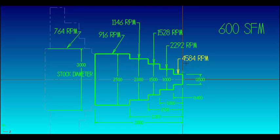At each diameter, maintaining 600 surface feet per minute constant surface speed, we start out with 4584 RPM at half inch, then at 1 inch diameter we're at 2292 RPM, then at 1.5 inches we're at 1528 RPM, at 2 inches we're at 1146 RPM, and at 2.5 inches we're at 916 RPM.